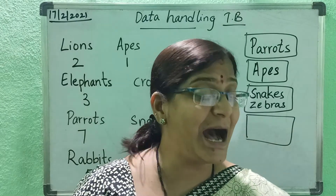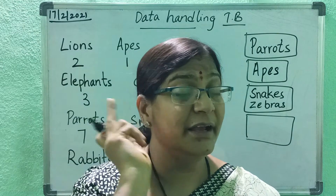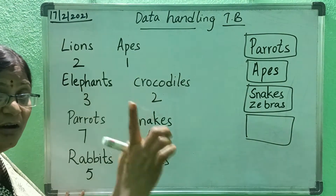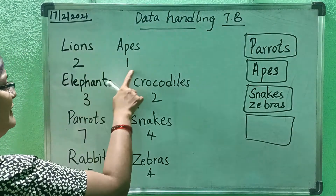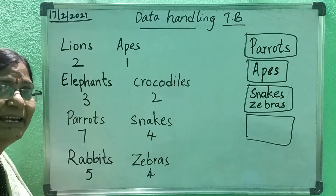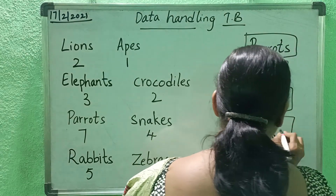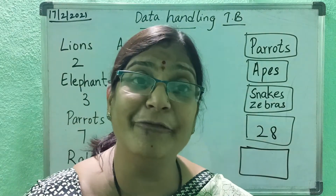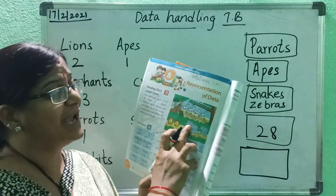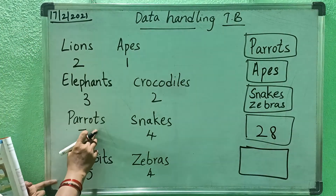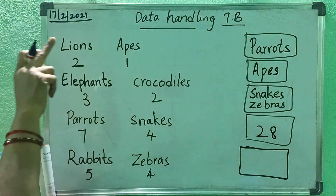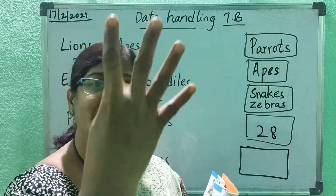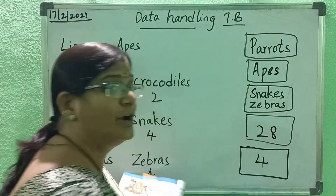How many animals are there in all? In all means total — we have to add everything. Total how many animals are there? Twenty-eight. Last one: how many more parrots are there than elephants? We have three elephants and seven parrots, so we have to do minus — seven minus three. Count from the lower number up: four, five, six, seven — that's four. Answer is four.